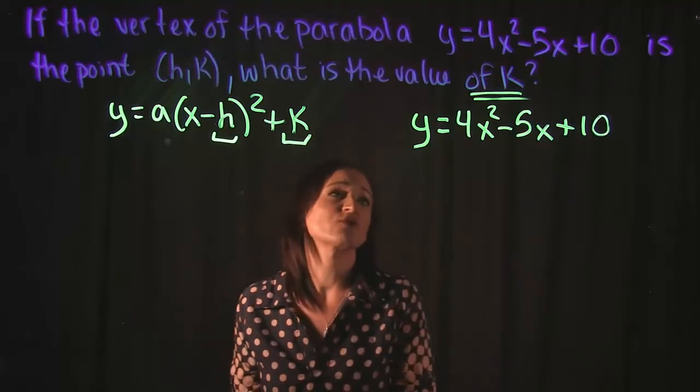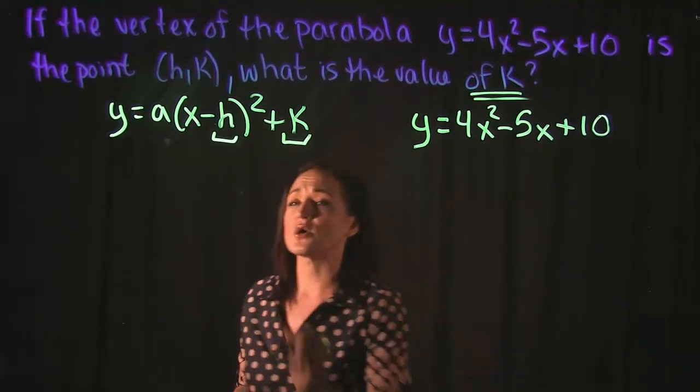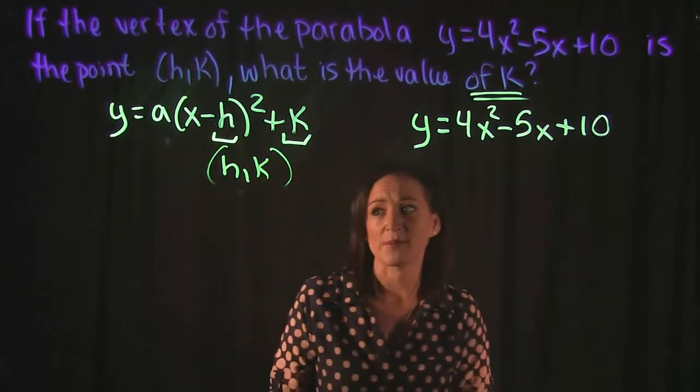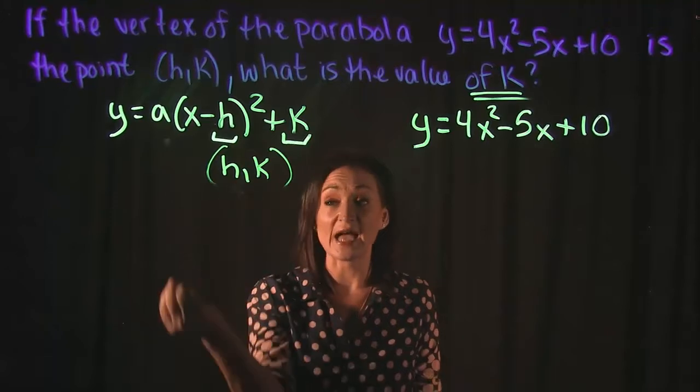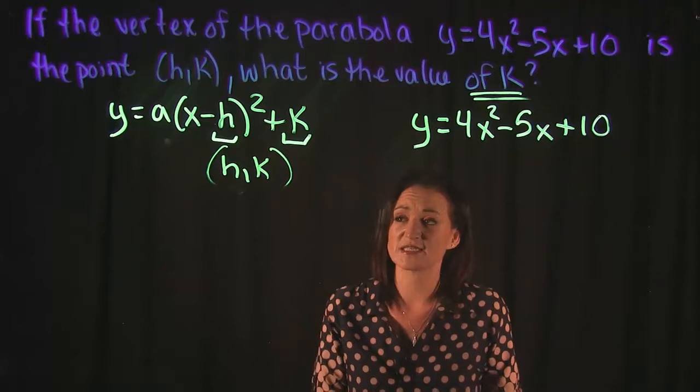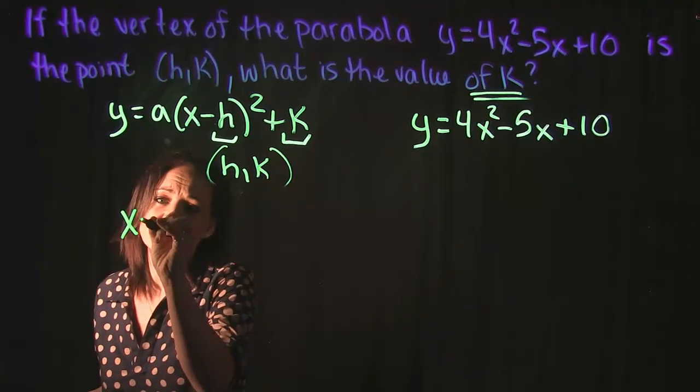The point (h,k) represents the vertex of a parabola, where h is the x-value for that vertex and k is the y-value. There's a little mini formula that we have: x = -b/2a.